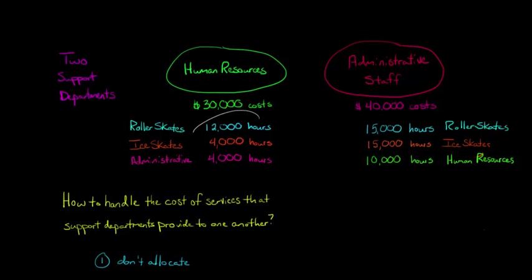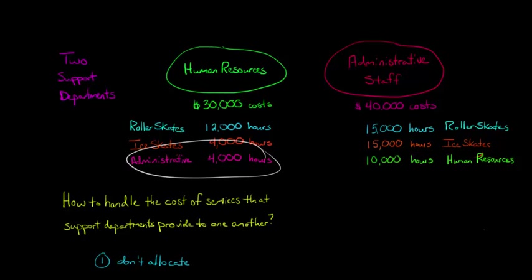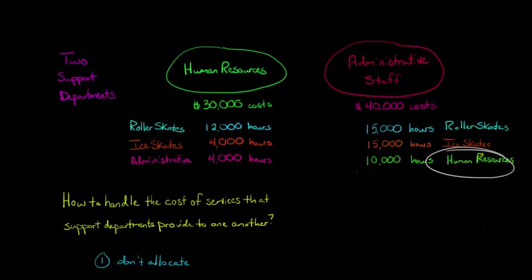Instead, we focus on the hours for the roller skate and ice skate divisions. Adding those together gives 16,000 hours. So when we figure out how much of the $30,000 in HR costs to allocate, we take 12,000 out of 16,000 and multiply by $30,000 — completely ignoring the hours HR performed for admin staff. When we get to the admin staff department to allocate their $40,000, we see HR constitutes 10,000 out of 40,000 hours, but we ignore that the same way.